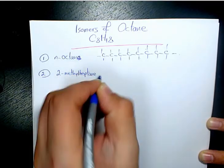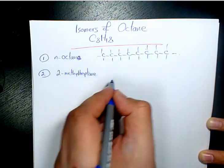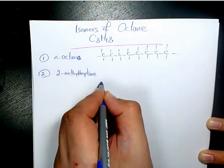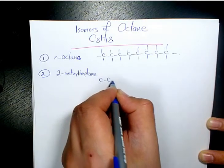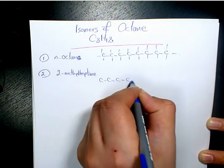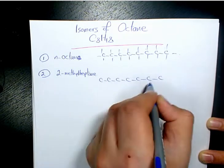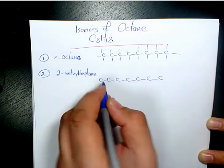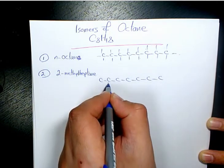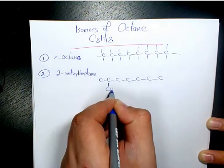The second one is going to be 2-methylheptane. We have the main chain here with seven carbons and we have a methyl group on the second carbon.